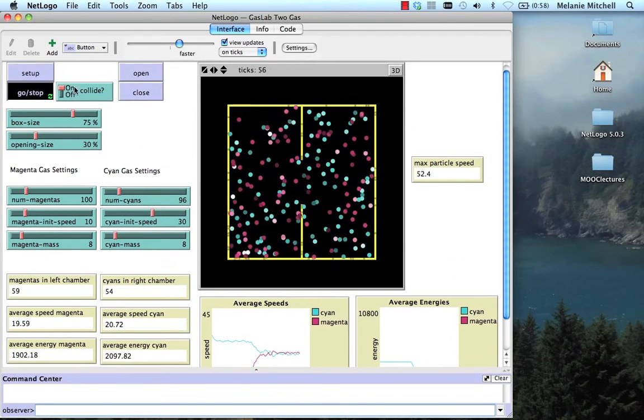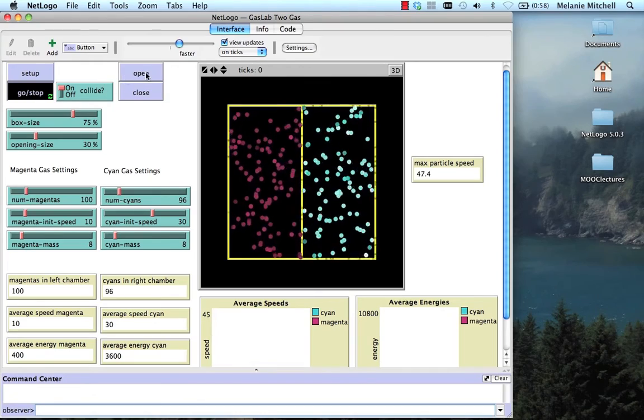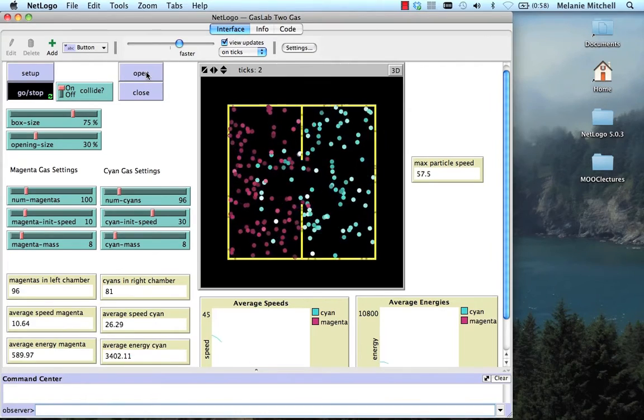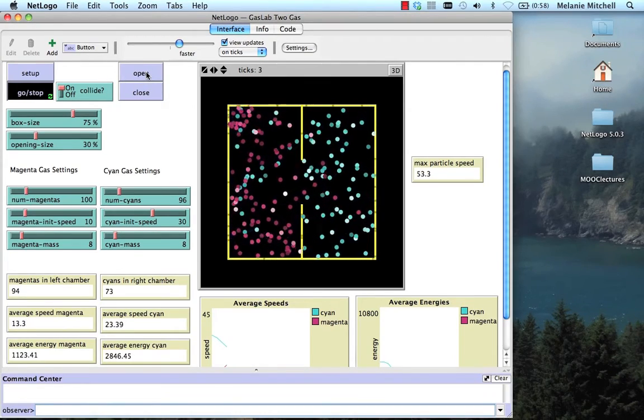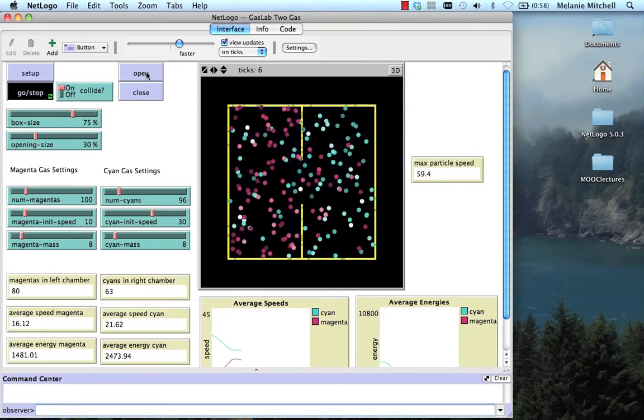So we start off, if I stop this, we start off from a very highly ordered, low entropy system, and if we allow them to mix, the system very quickly becomes a disordered high entropy system.